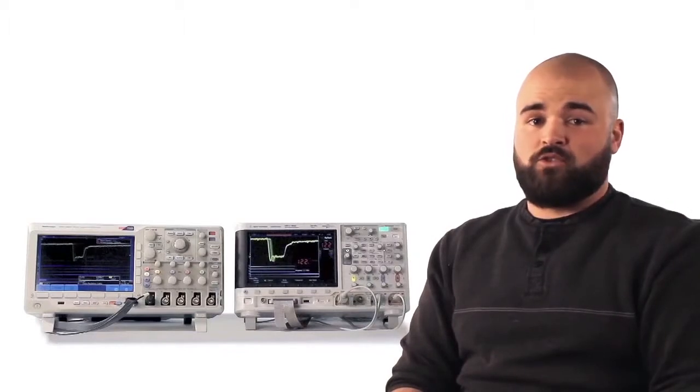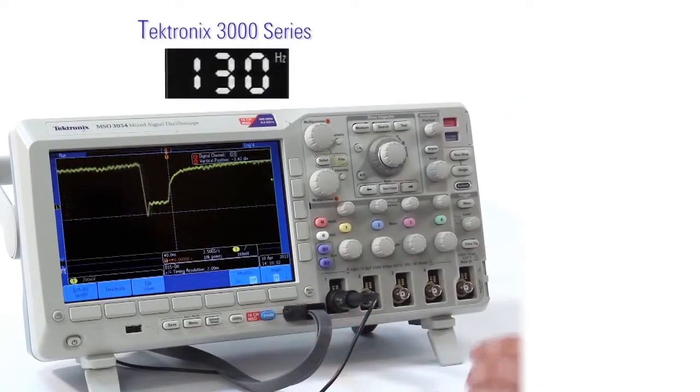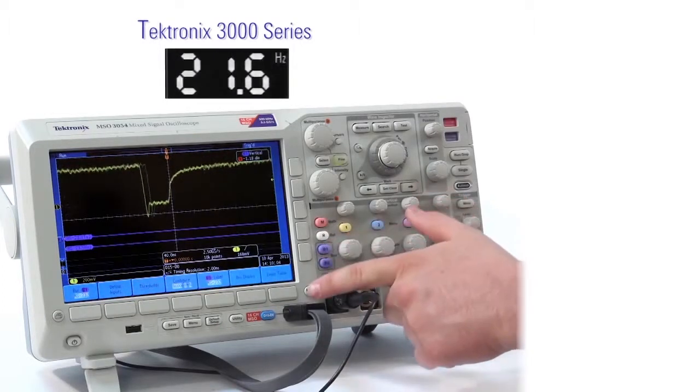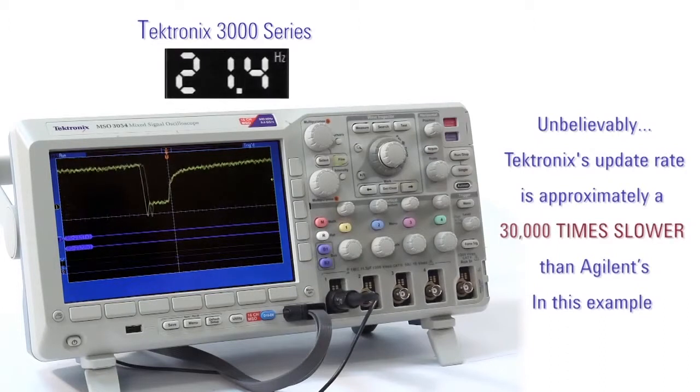Let's look at the Tektronix scope. As we enable digital channels and a serial bus, notice how the glitches and jitter have basically disappeared. The update rate has dropped significantly to just 22 waveforms per second.